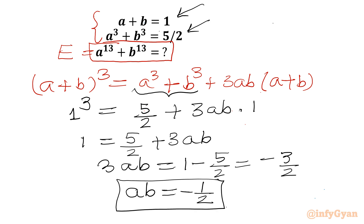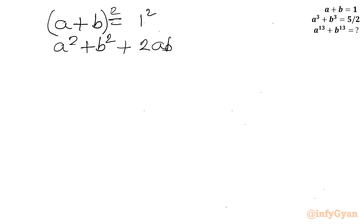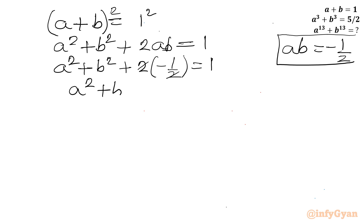Now I will consider our first equation once again: a plus b equal to 1. Consider squaring both sides. So a square plus b square plus 2ab equals 1. Now ab we have just calculated — it was minus 1 over 2. Applying this value: a square plus b square plus 2 times minus half equals 1. We can cancel 2 with 2, so a square plus b square minus 1 equals 1. Therefore a square plus b square equals 2.